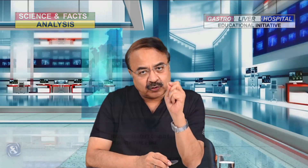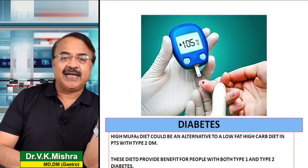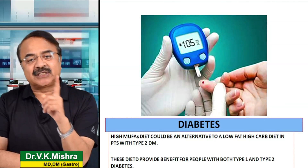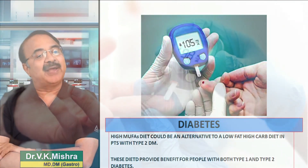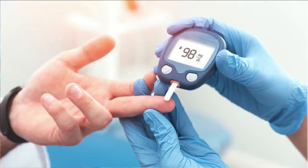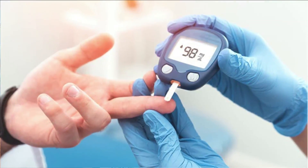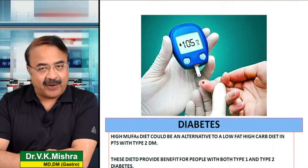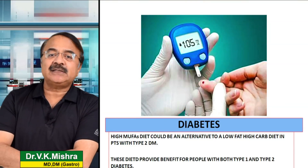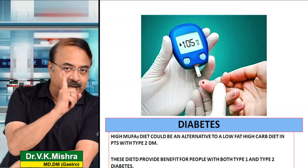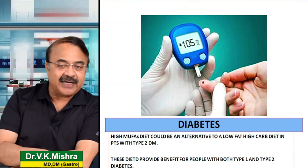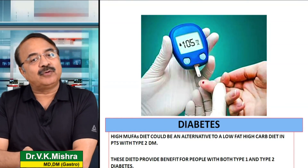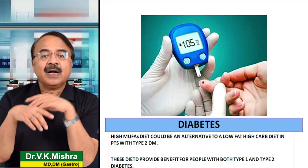अगर हम high MUFA diet को लेते हैं, तो diabetes type 2 तो control होती है, लेकिन इस journal ने यह भी study published की that the beneficial effects are seen even in diabetes type 1 also. That means it helps you in type 1 diabetes and it helps you in type 2 diabetes also.